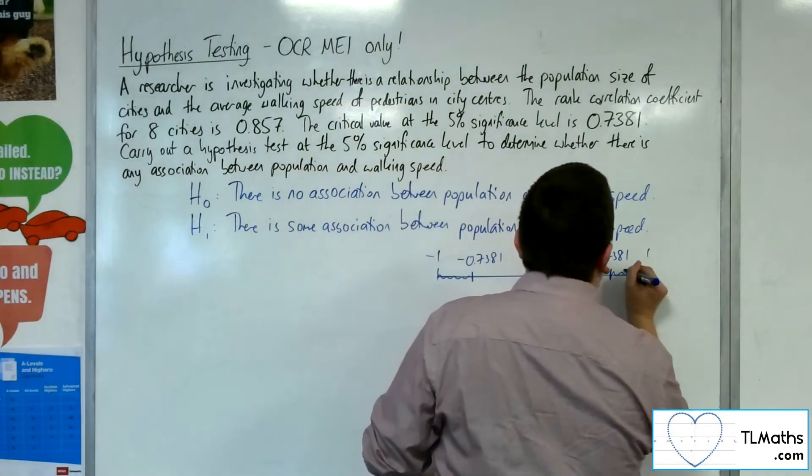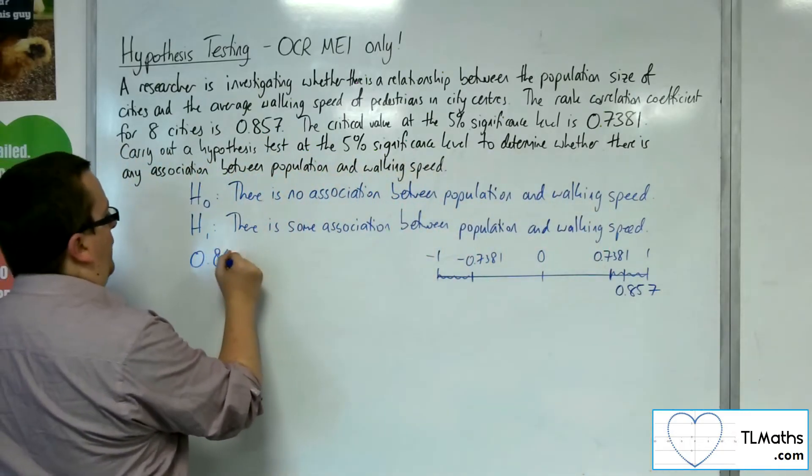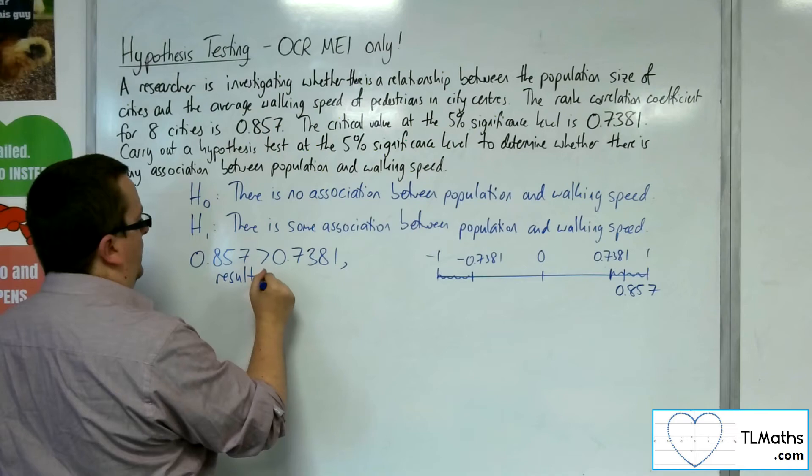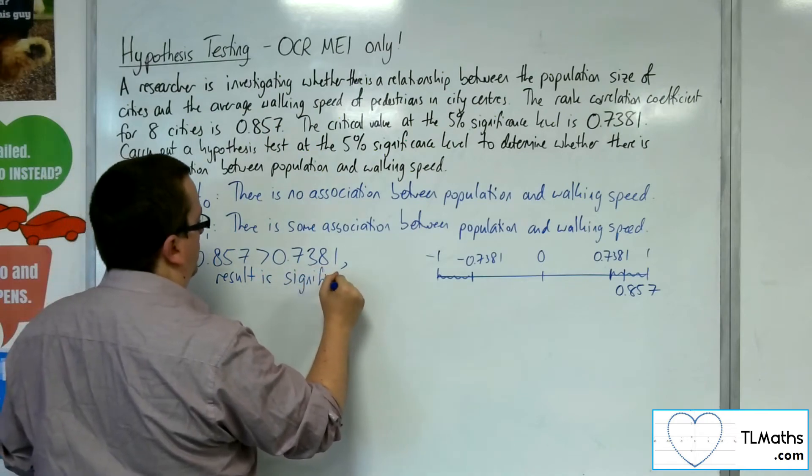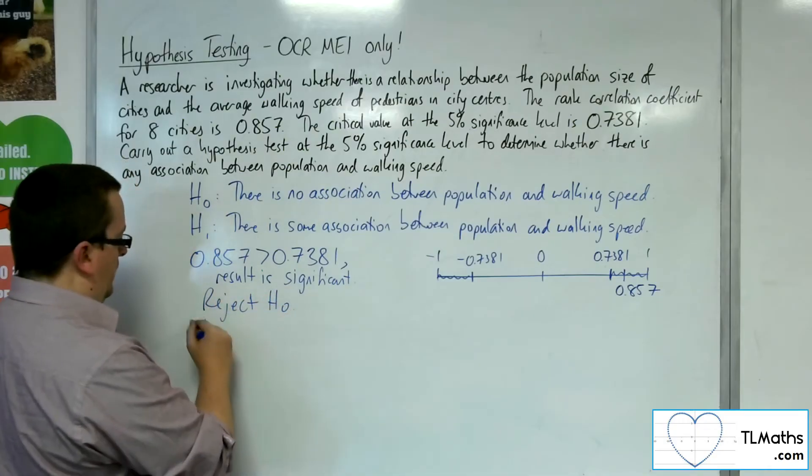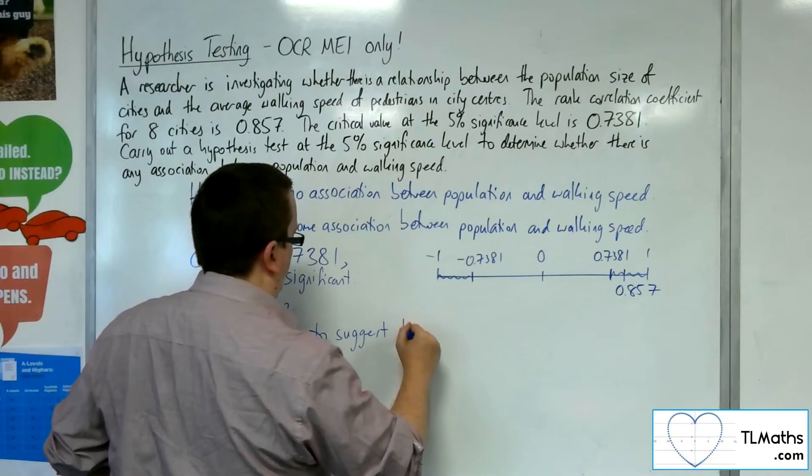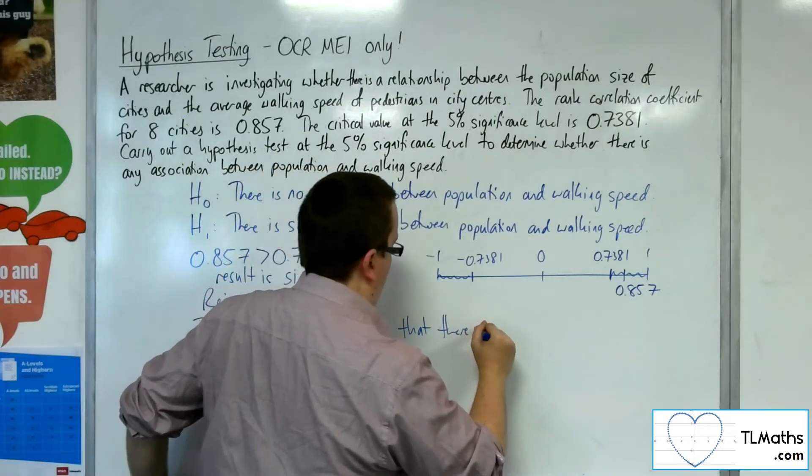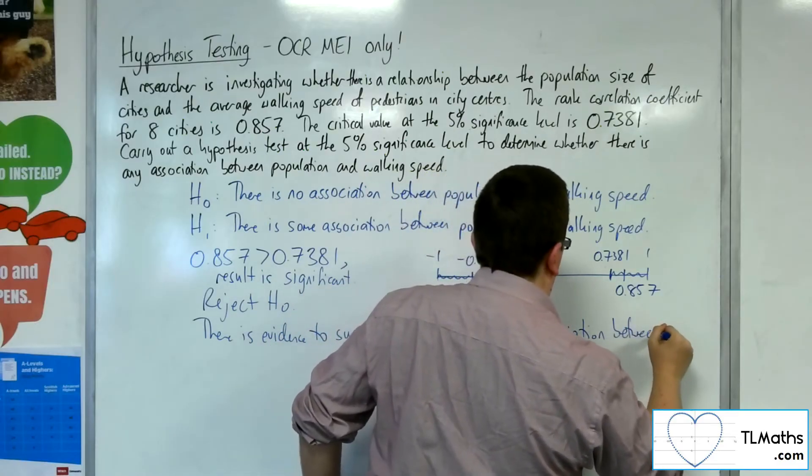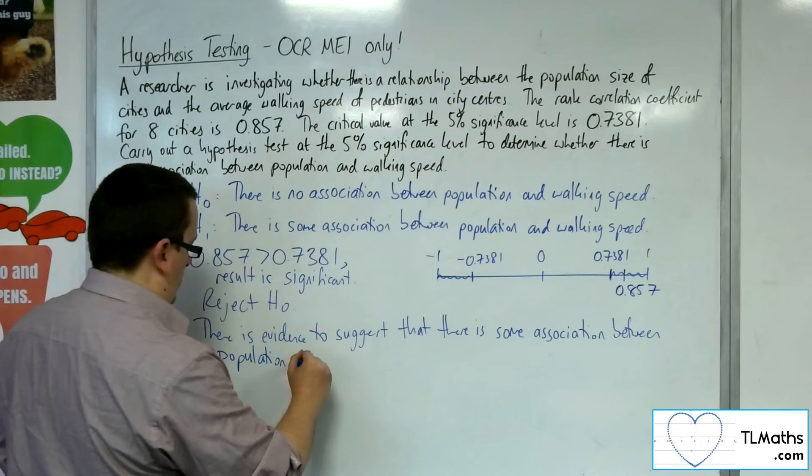We've got 0.857, which is clearly inside the critical region. Because 0.857 is larger than 0.7381, the result is significant. We can reject the null hypothesis. There is evidence to suggest that there is some association between population and walking speed.